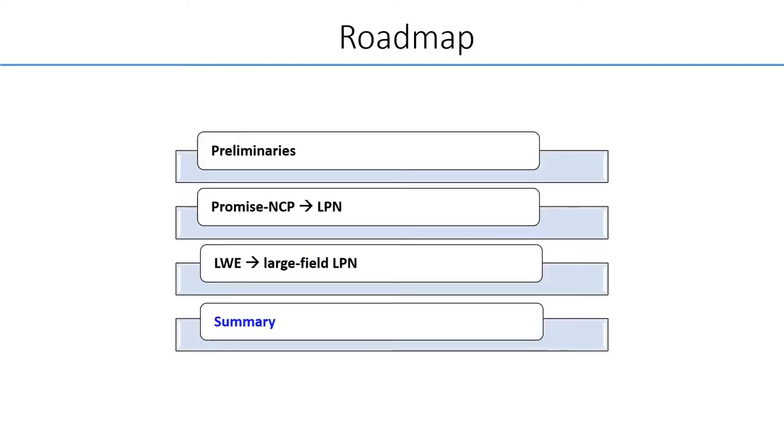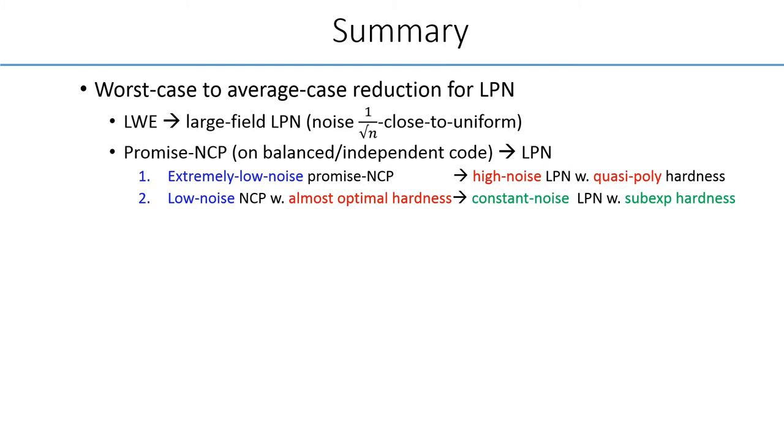Finally, a short summary of this work. We present two worst-case to average-case reductions for different types of LPN. First, large-field LPN can be reducible from LWE of the same modulus, and thus reducible from worst-case lattice problems such as gap SVP.